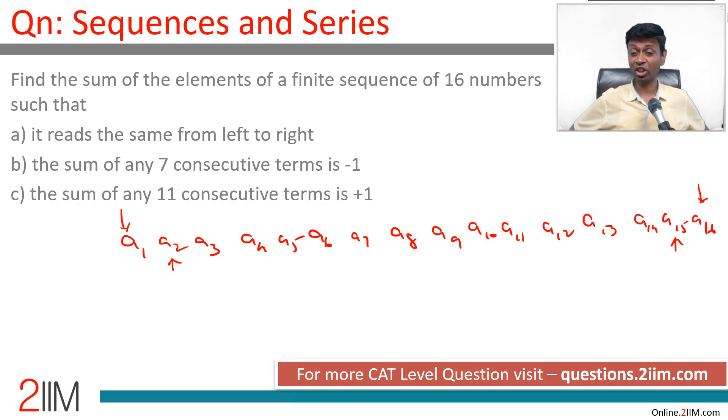The sum of any seven consecutive terms is minus one. So a1 to a7 if we add that will be minus one. a2 to a8 if we add that will be minus one. From a1 to a7 and a2 to a8, what is the difference? The first one has a1 and six other terms. The second one has six same terms and a8. This basically tells us a1 and a8 should be same.